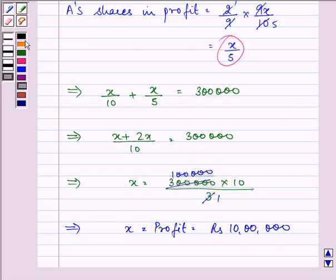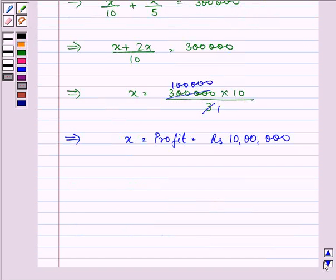Now, we can easily find out the share of B and C. B's share will be equal to 3 out of 9, that is, he is getting 3rd part out of the 9th part of 10 lakh.